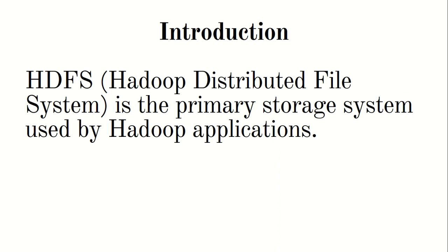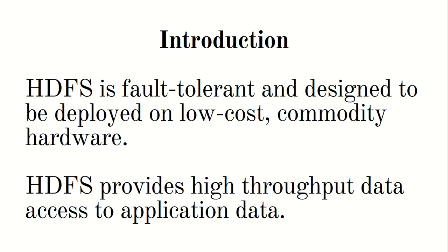Starting with an introduction, HDFS is the primary storage system used by Hadoop applications — it's a file system used to store data. One important point about HDFS is its distribution. Distribution has multiple advantages: if something goes wrong and one node fails, operations still continue smoothly because of the concept of replication. The bigger data is distributed across multiple machines, and those chunks of data are further replicated. So if one node goes down, it will not affect the whole operation.